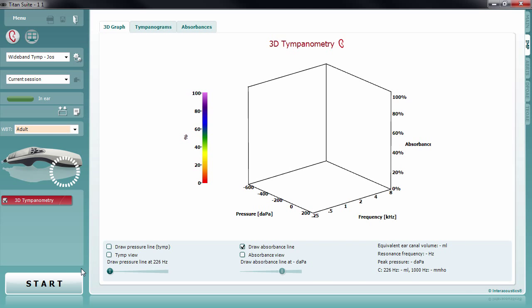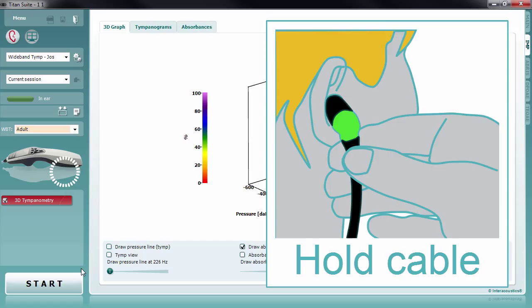In order to avoid probe movements during the measurement, try not to hold the probe. In case you do, try to hold the cable end rather than the probe, as this will least influence the measurement.